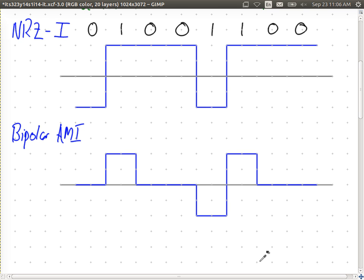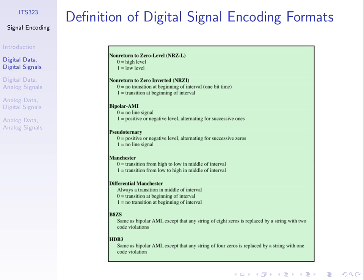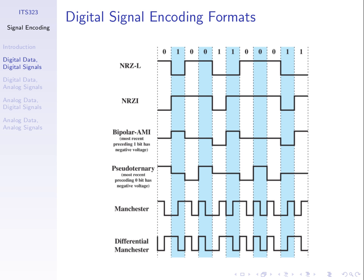Pseudoternary is really the opposite of bipolar AMI. With a bit one, we send zero volts. With a bit zero, we alternate between positive and negative. So bit zero alternates positive, negative, positive, negative. It's like the inverse of bipolar AMI. Unlike NRZ schemes, bipolar AMI does return to zero, which has some consequences when we look at the characteristics of these schemes.